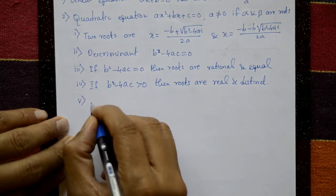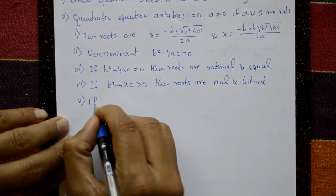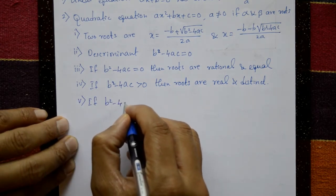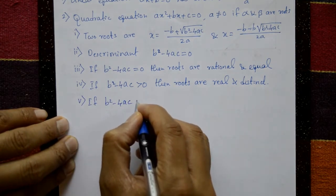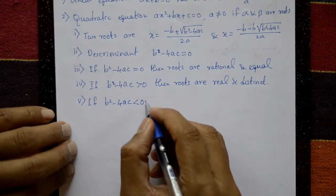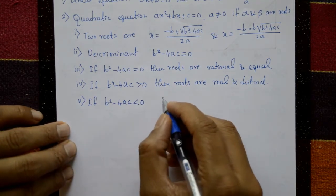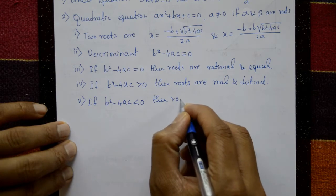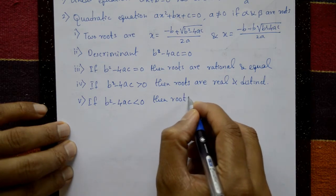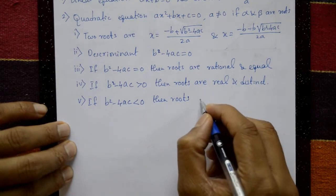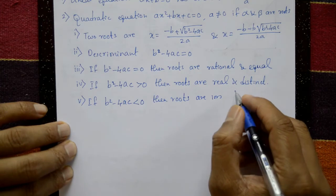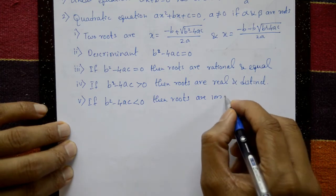Fifth point: if b squared minus 4ac is less than 0, then the roots are imaginary.